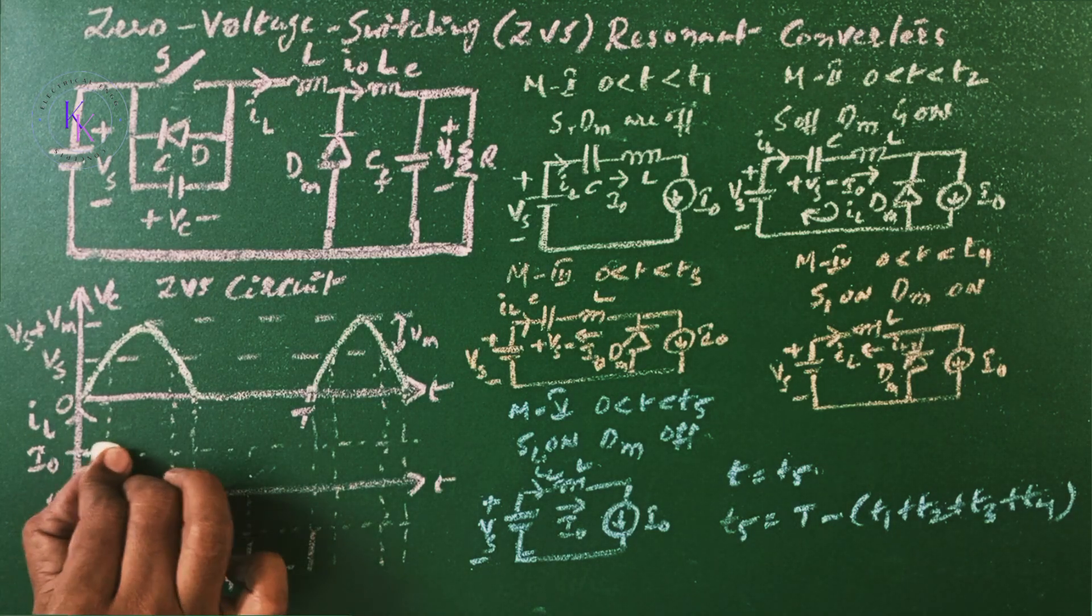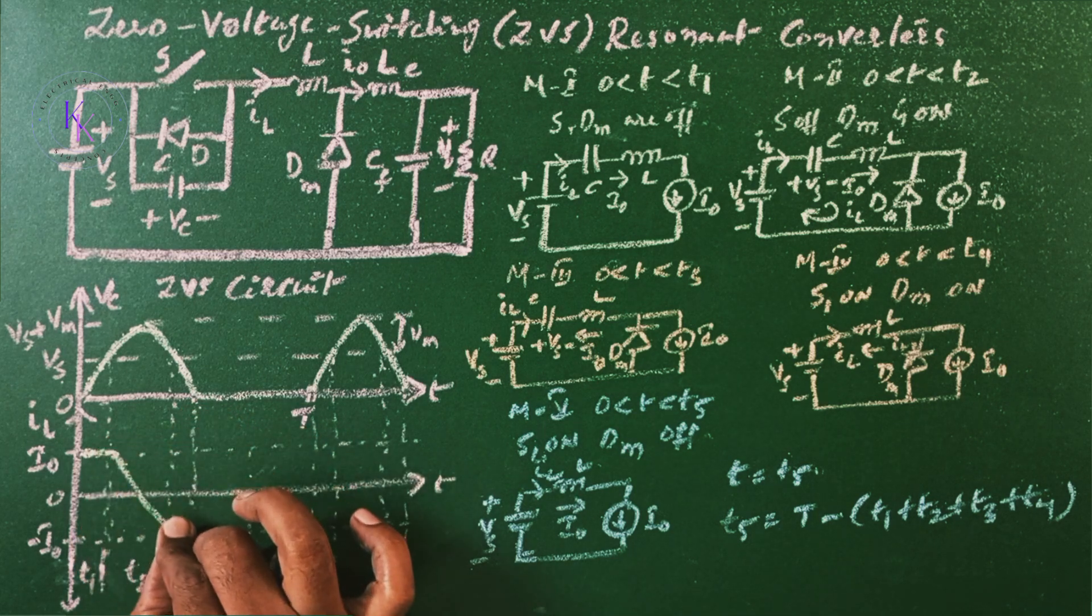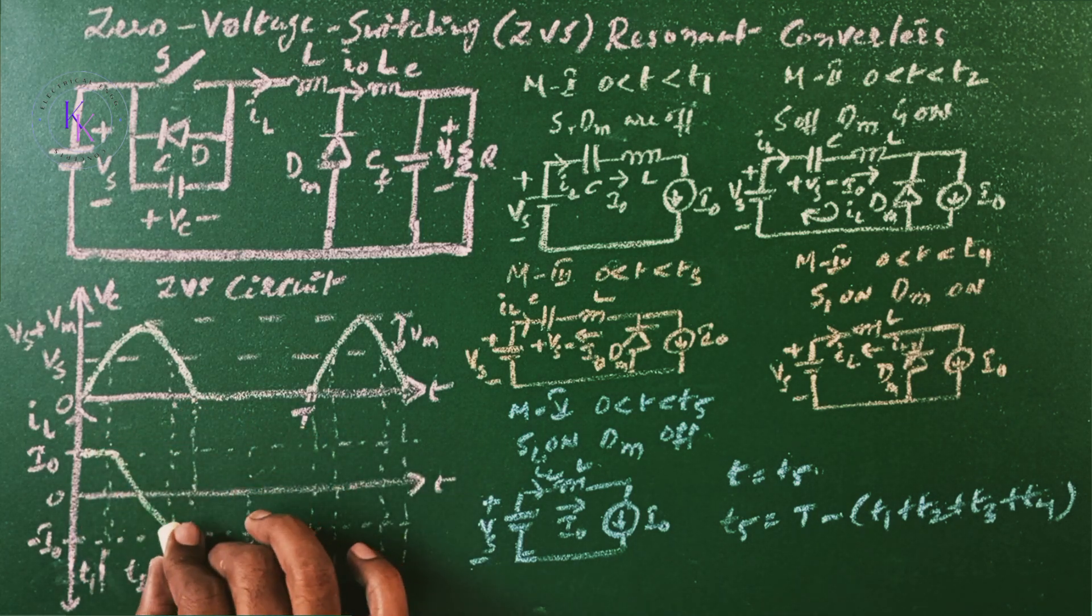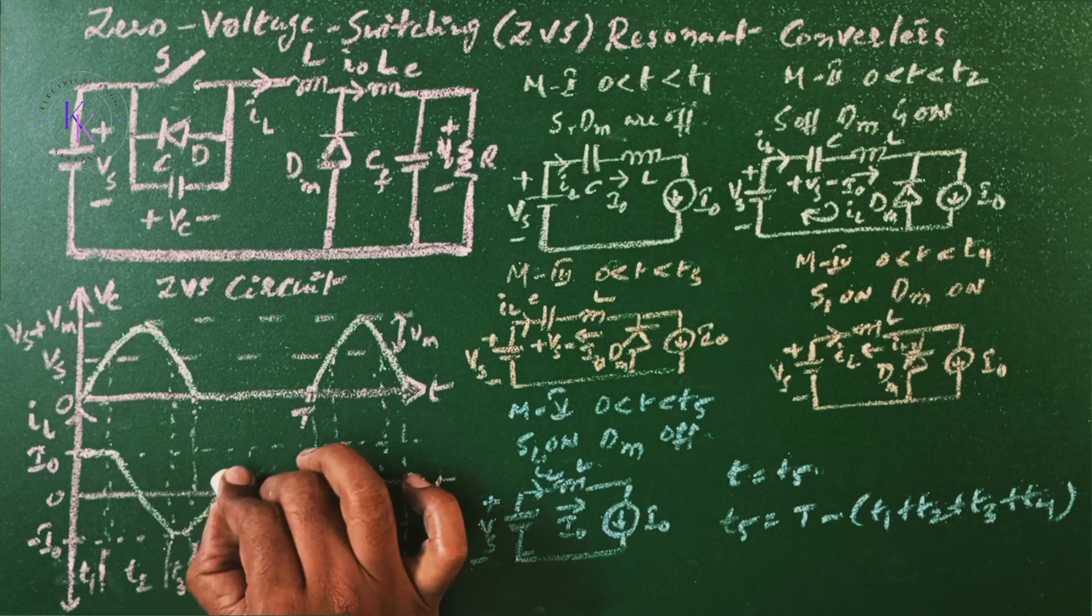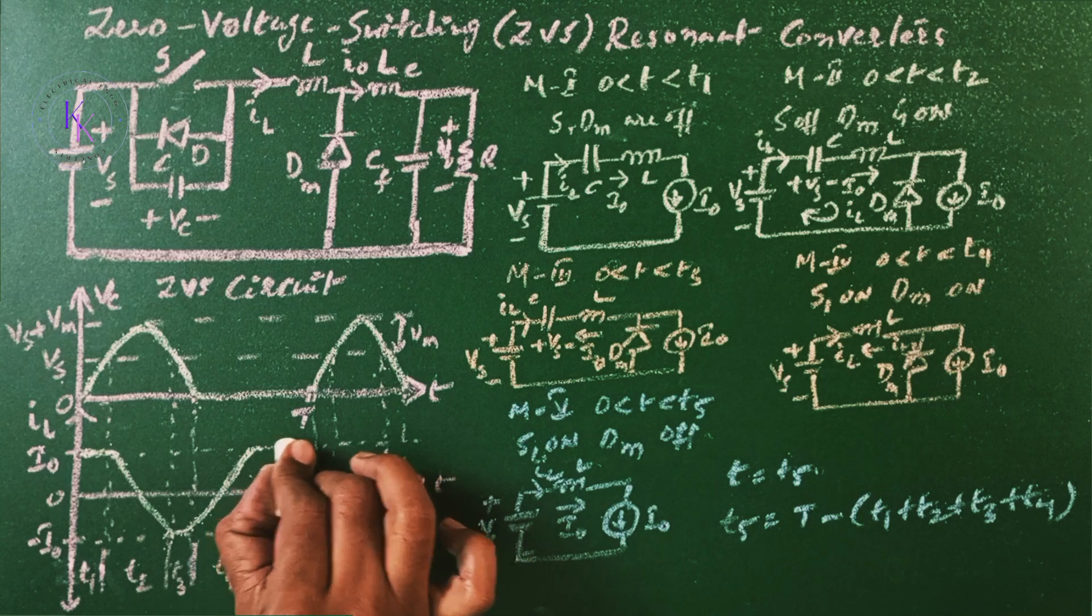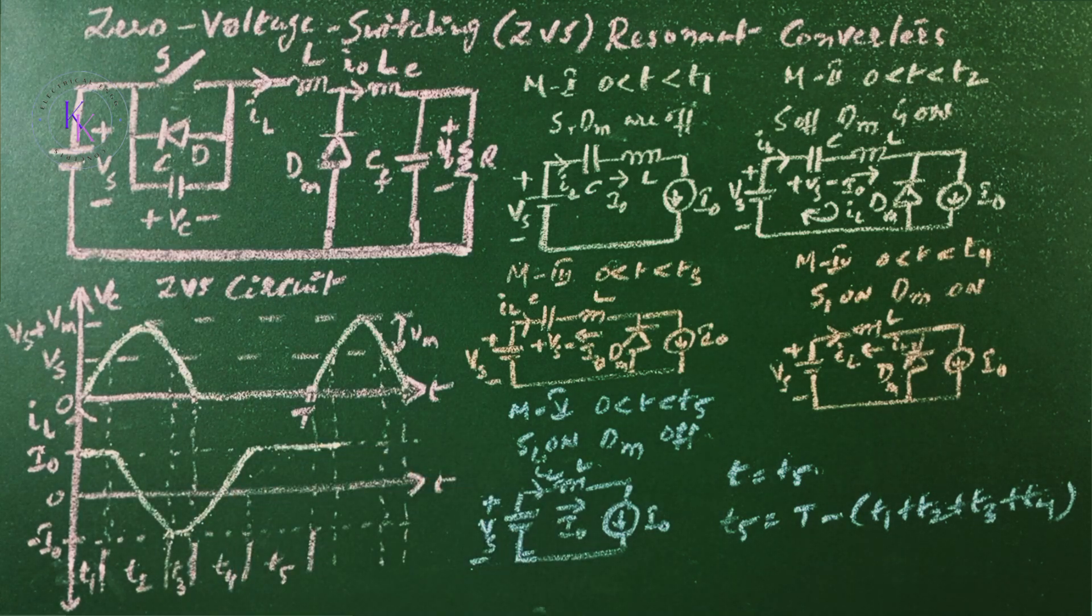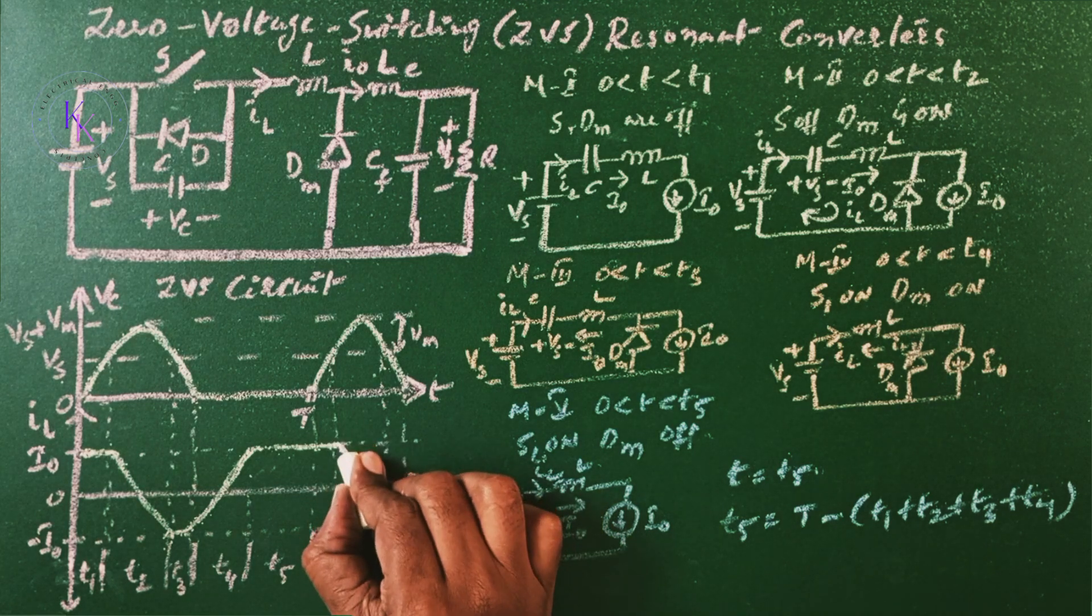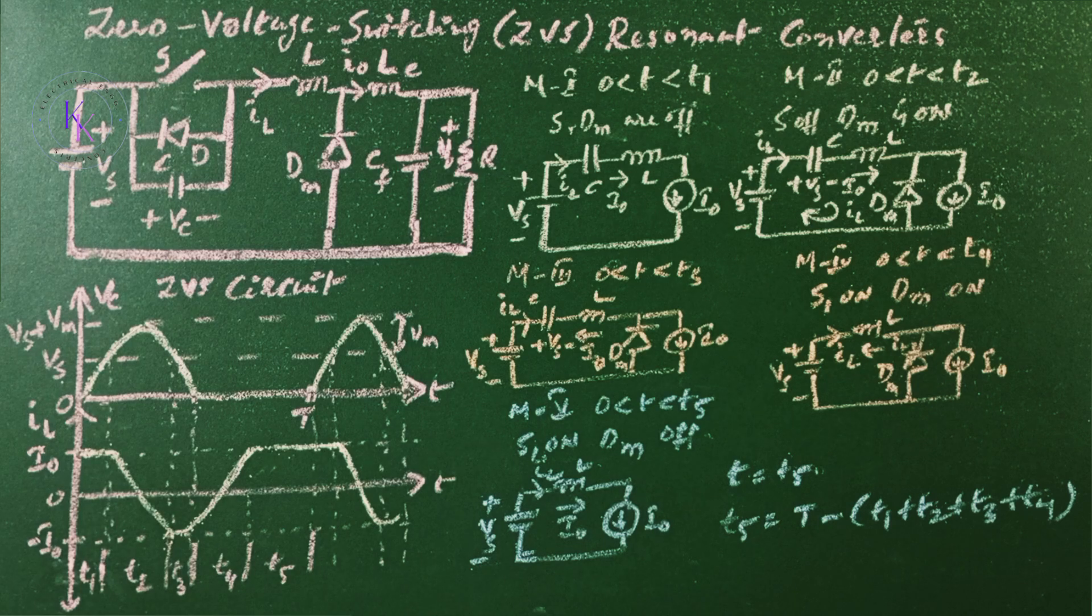The inductor current IL in Mode 1 will be at I0. In Mode 2 it will become negative I0. In Mode 3 it starts rising. In Mode 4 it will reach the maximum value of I0 again. And in Mode 5 it stays at I0. In the next cycle also in Mode 1 it stays at I0, again it reaches the negative and starts increasing again.